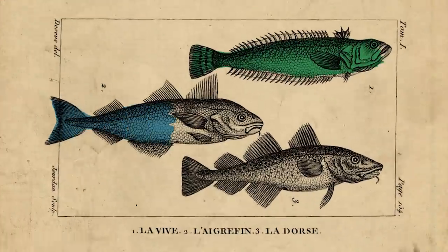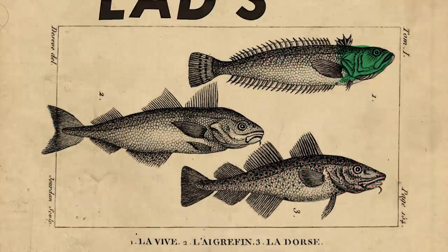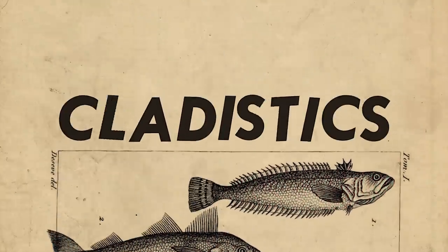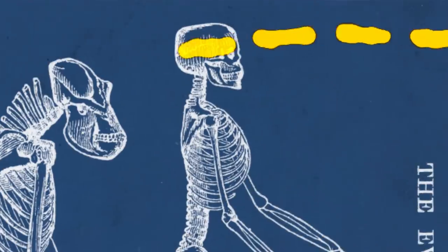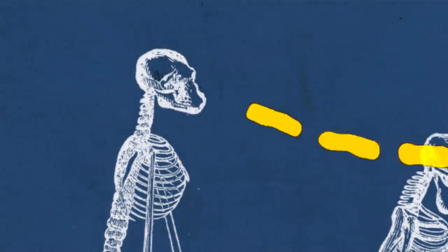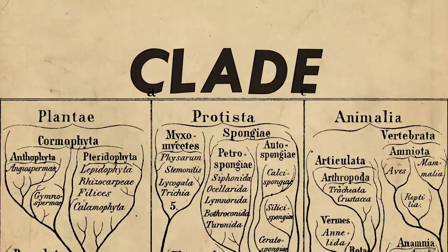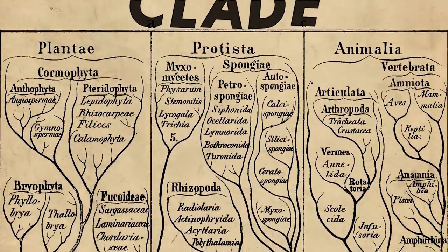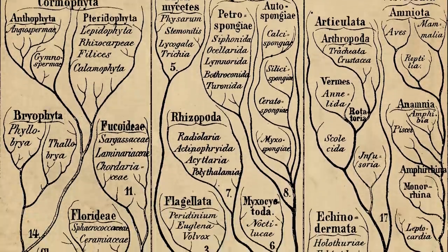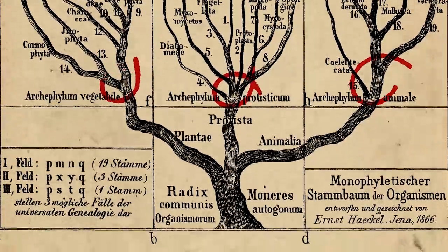But that isn't the only way to classify creatures. There's also a thing called cladistics. Derived from the works of Willy Hennig, cladistics groups organisms by common characteristics traced all the way back to their common ancestor. This grouping is called a clade. It makes sense if you think about it, because instead of grouping things by how much they look like each other, you group them by how closely they're related.